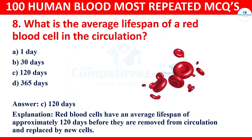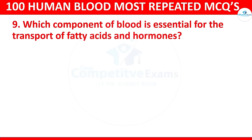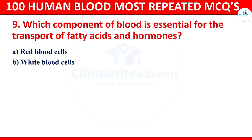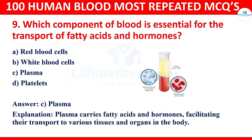Question 9: Which component of blood is essential for the transport of fatty acids and hormones? The correct answer is plasma. Plasma carries fatty acids and hormones, facilitating their transport to various tissues and organs in the body.